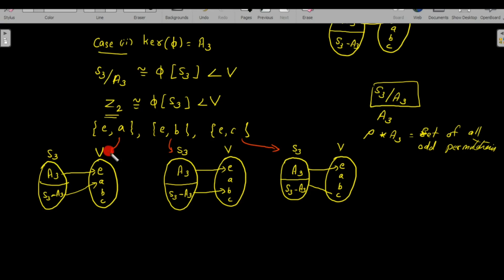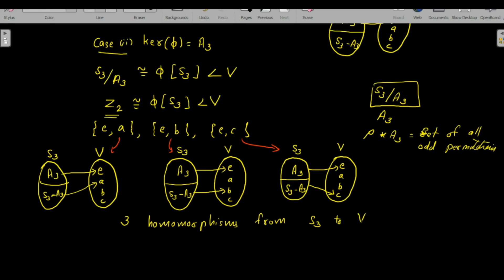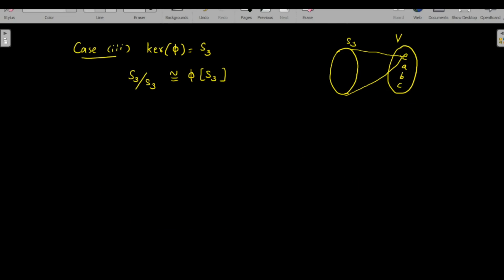If φ(S₃) = {e,a}: all elements of A₃ map to e and all elements of S₃ minus A₃ map to a. If φ(S₃) = {e,b}: A₃ maps to e and the remaining elements map to b. If φ(S₃) = {e,c}: A₃ maps to e and the remaining elements map to c. Altogether there are three different homomorphisms from S₃ to V under this case.